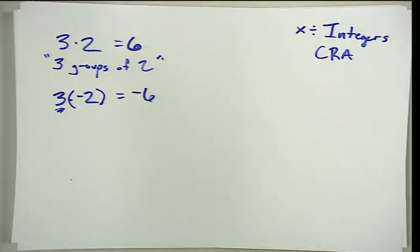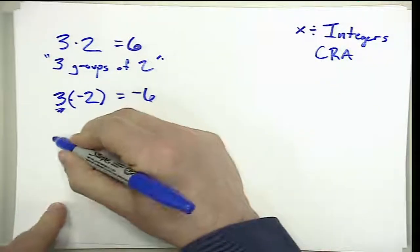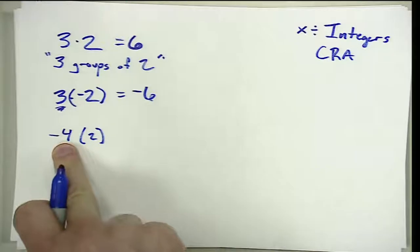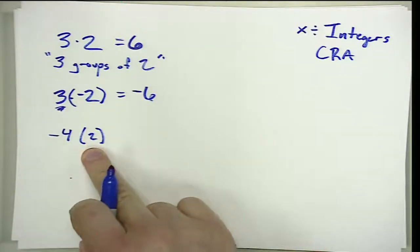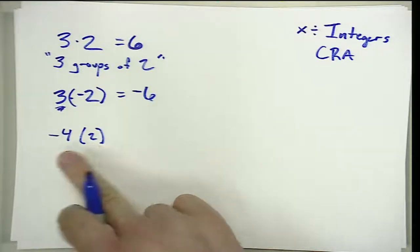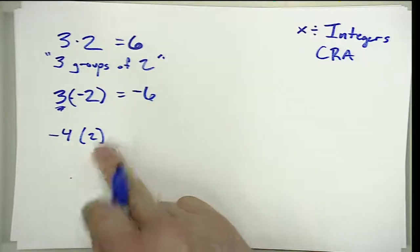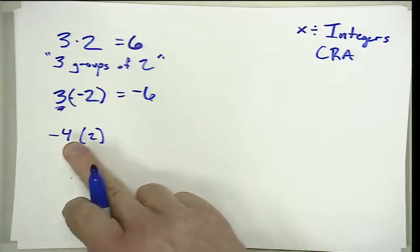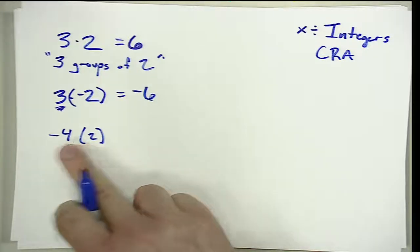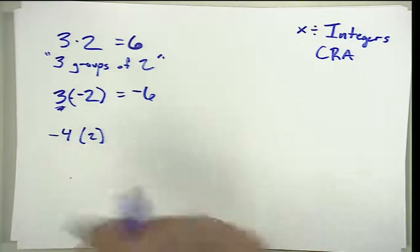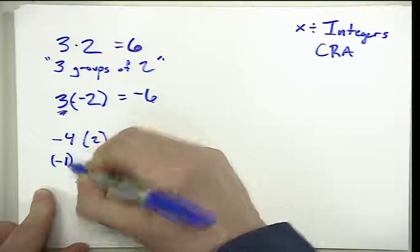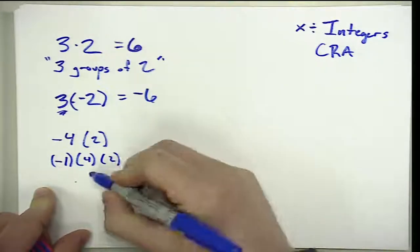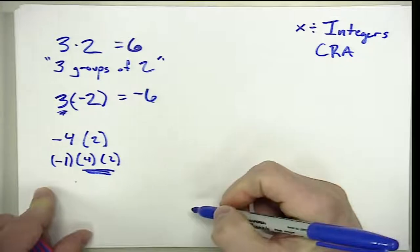Where it gets interesting is when the first number is negative. Let's say this was negative four times two — we can't do negative four groups. What we do is factor off that negative one and treat this as negative one times four times two. So now we can still do our four groups of two like we used to, and then we handle the negative by doing the opposite.